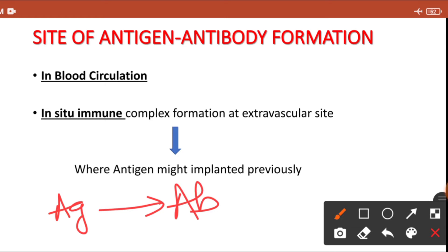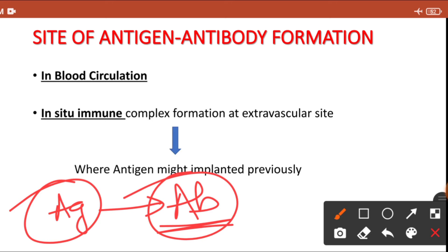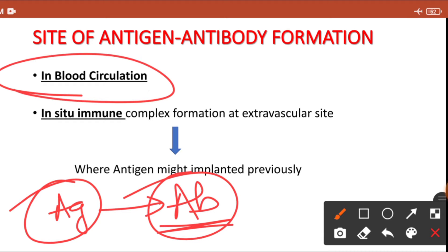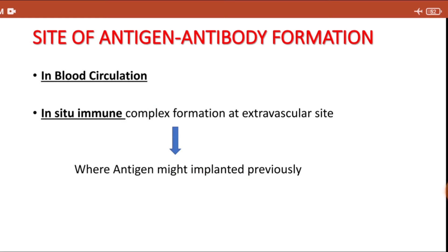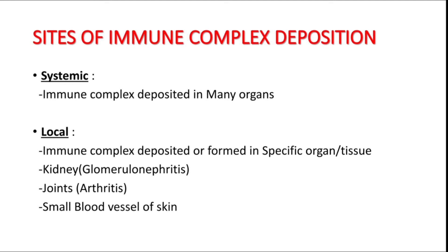Following the antigen exposure we have antibody formation. What could be the site of immune complex formation? The antigen and antibody will combine and form an immune complex. They can form in the blood circulation within the blood vessel, or they can form in a particular organ at an extravascular site — in kidney, in joint, etc., where antigen might have implanted previously.